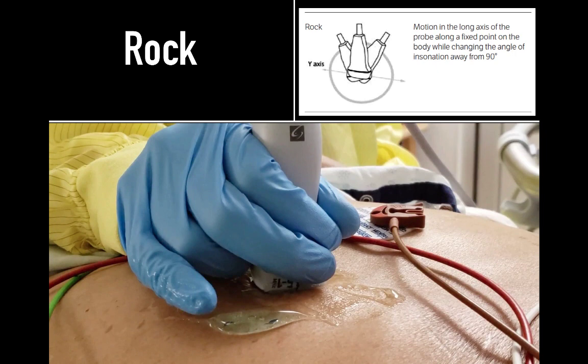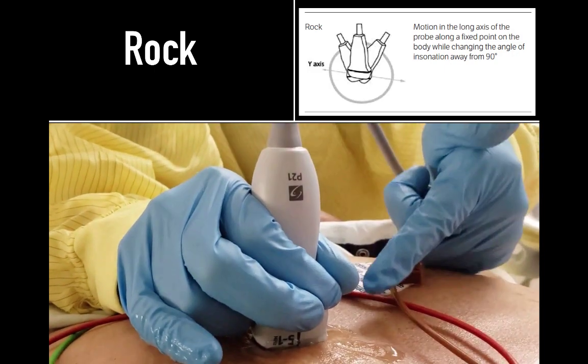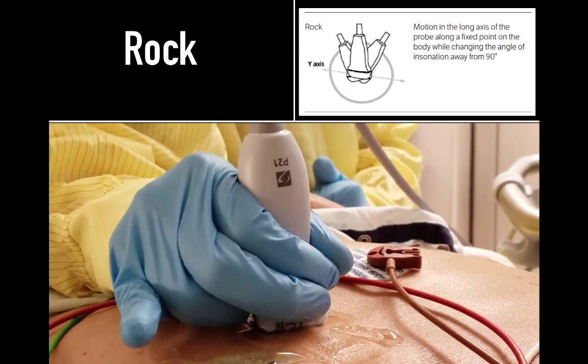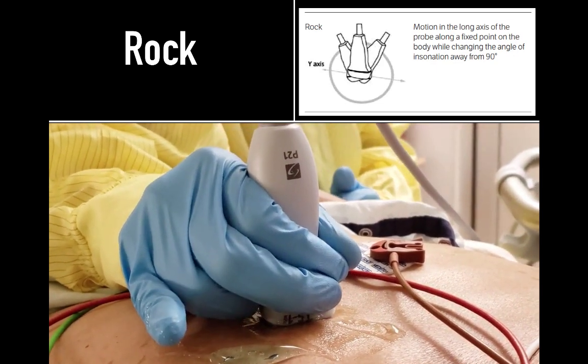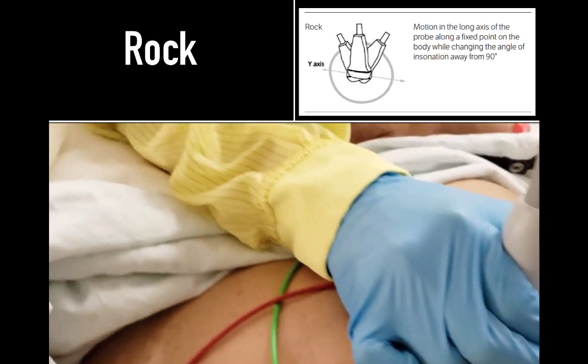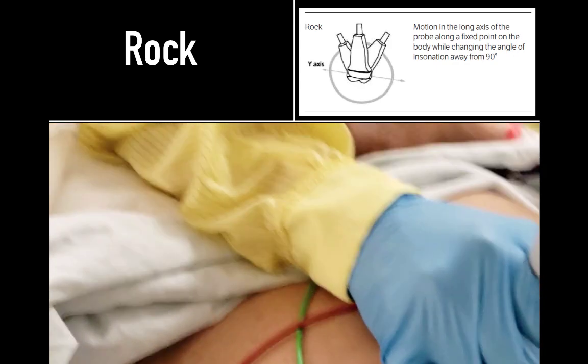Rocking is another key feature. This is a more complex action, and one which people will often struggle to understand. First of all, the probe must remain fixed in one position on the body. And the probe moves, or rocks, back and forth along the axis of the probe. The probe moves, or rocks, back and forth along the long axis of the probe, while changing the angle of inclination away from 90 degrees.